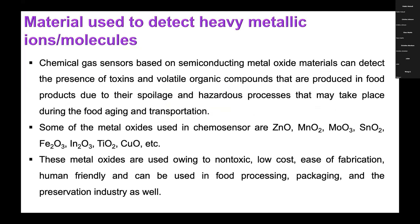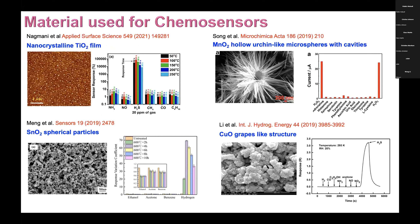There are different materials used for making chemo sensors, which can be various metal oxides like zinc oxide, manganese oxide, molybdenum oxide, tin oxide, ferrous oxide, indium oxide, titanium oxide, and copper oxide. These metal oxides are used owing to their non-toxic nature, low cost, ease of fabrication, human-friendly properties, and can be used in food processing, packing, and preservation industries. Among recent research trends, Nagmani et al. synthesized nanocrystalline TiO2 thin film and checked sensor selectivity for H2S gas. The response time was 45 seconds at 100°C.